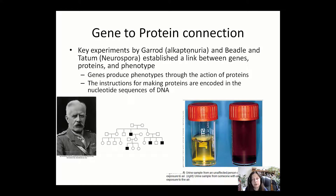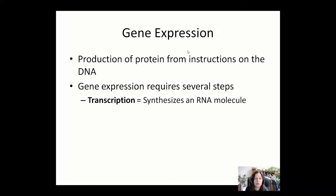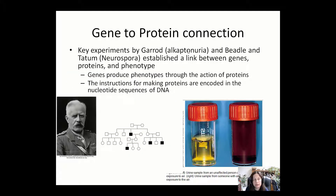Beadle and Tatum worked on bread mold Neurospora and found that when they mutated certain genes important in the vitamin B pathway by exposing bread mold to radiation, it affected enzymes in the vitamin B pathway. This established a link between genes and proteins, and confirmed the results that Archibald Garrod had derived from his earlier experiments.